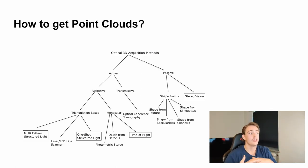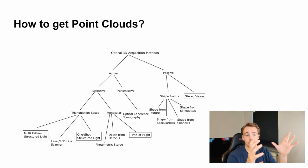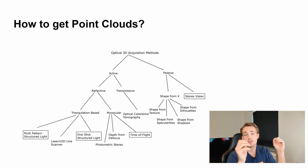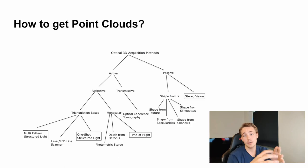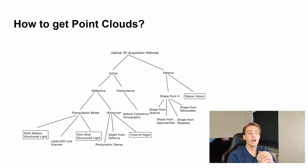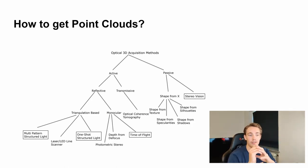Now let's talk about different methods and sensors we can use to get point clouds. We have optical 3D acquisition methods — both active and passive — to get X, Y, and Z coordinates of points in our environment. With a camera we get 2D information, but combining two cameras in a stereo vision setup adds depth, giving us full 3D information. In this video we're going to use the passive approach with stereo vision using two cameras — no lasers or active emission.